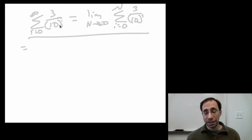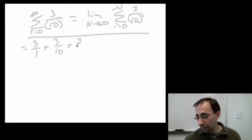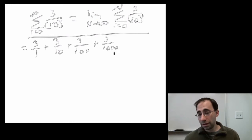Well, when i is zero, you have 10 to the zeroth power, which is 1. So this is 3 over 1. And the next one is 3 over 10, then 3 over 10 squared, which is 100, and 3 over 100, 10 cubed, which is 1,000, and so on forever.